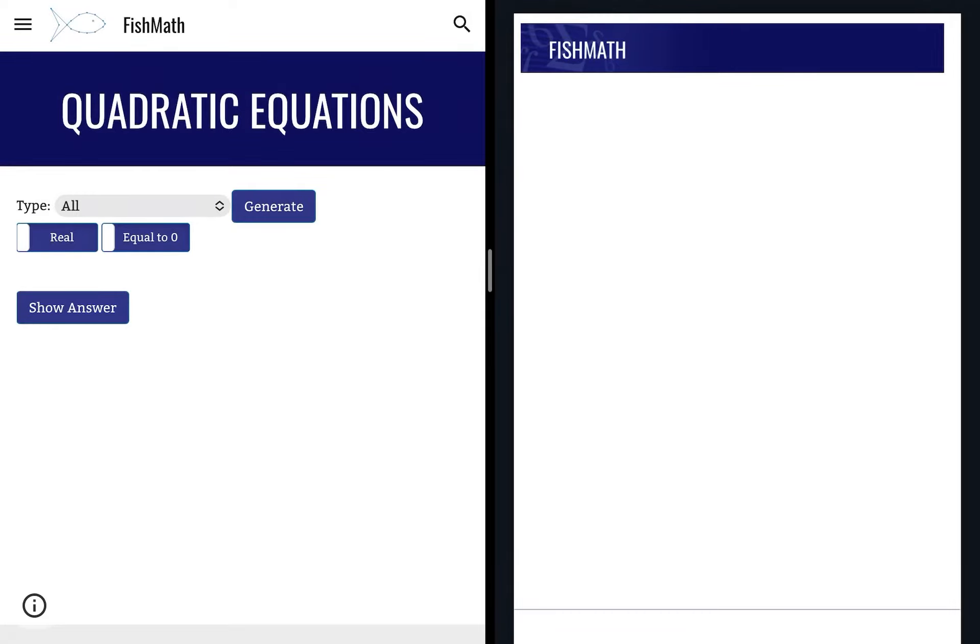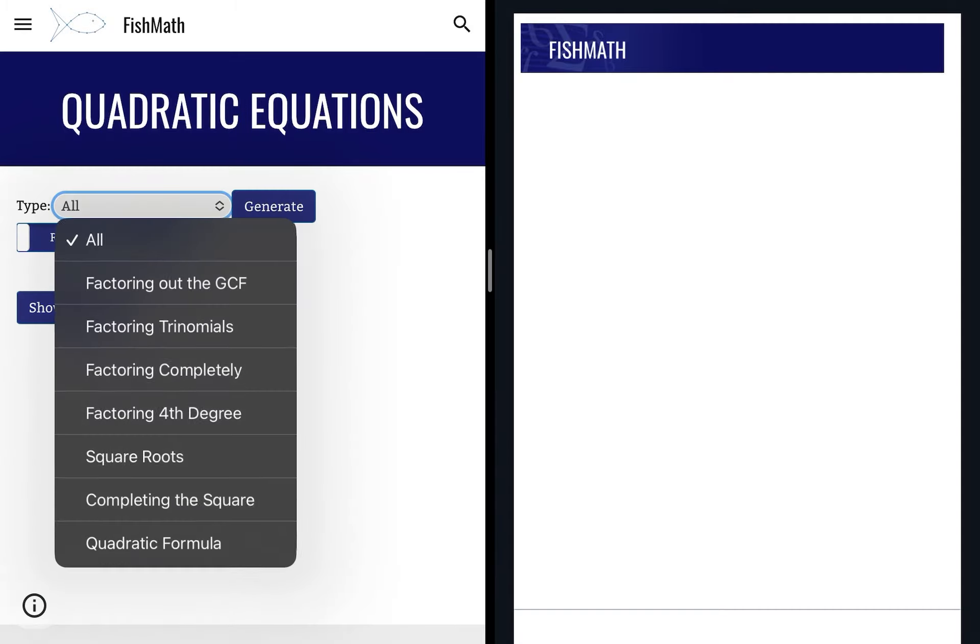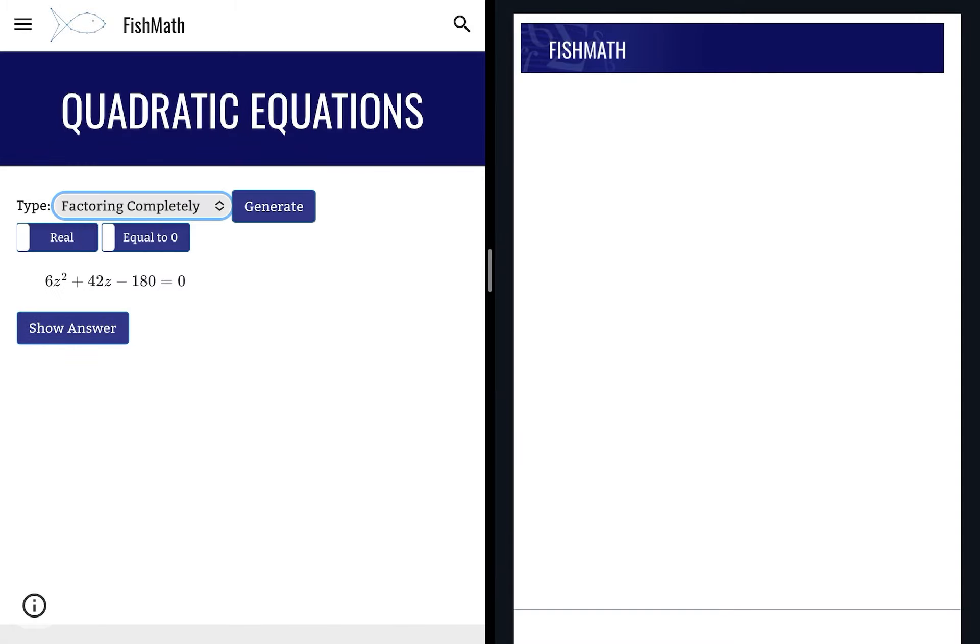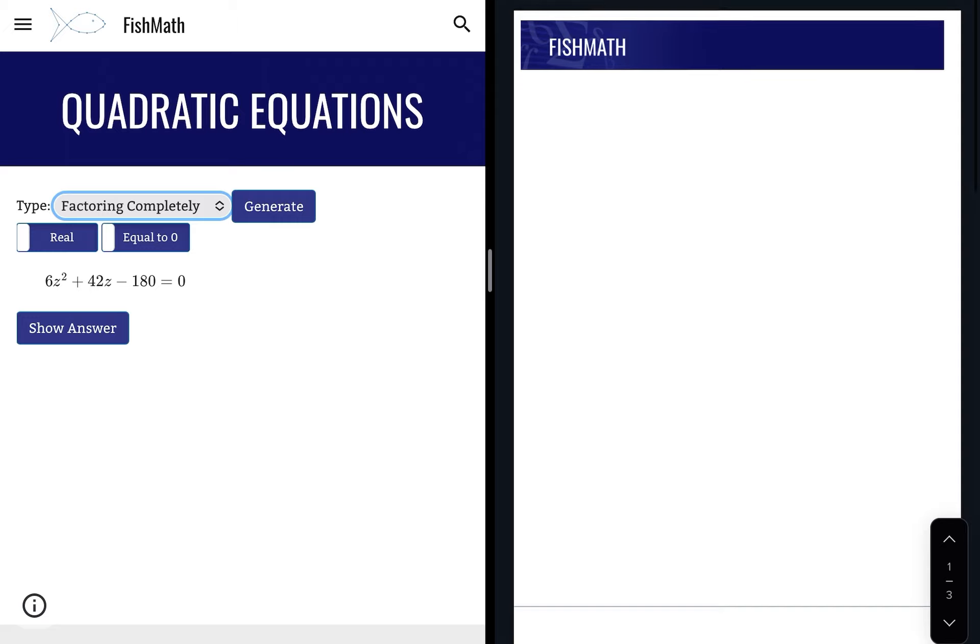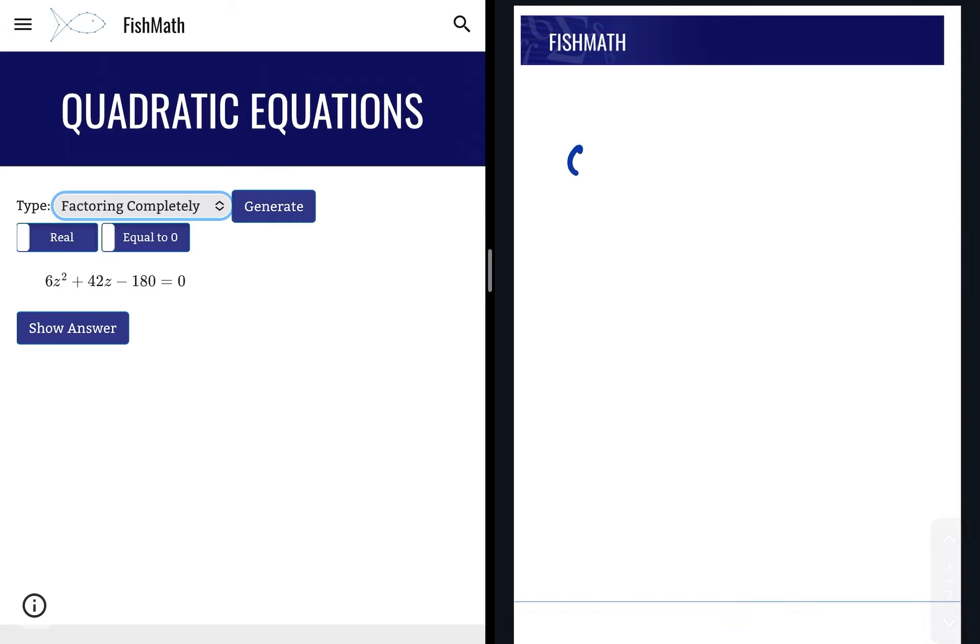We're going to solve some more complicated equations using what we know about quadratics. If I go here, I'm going to go to factoring completely. This is actually a quadratic because the highest power is 2, but you'll notice there's a number in front of the z squared that's not 1. So it's 6z² + 42z - 180 = 0.